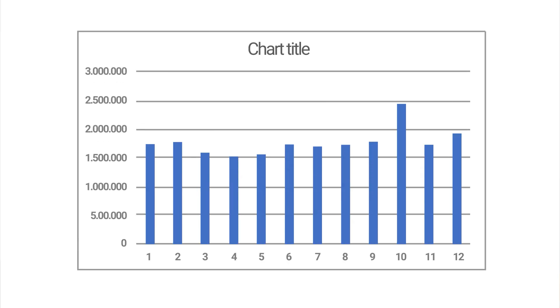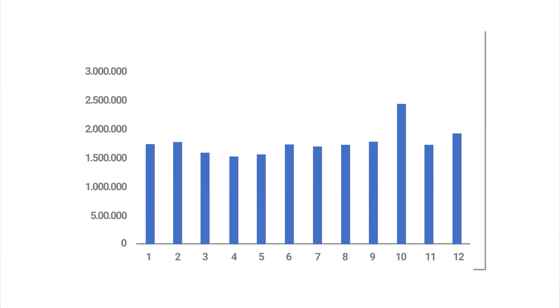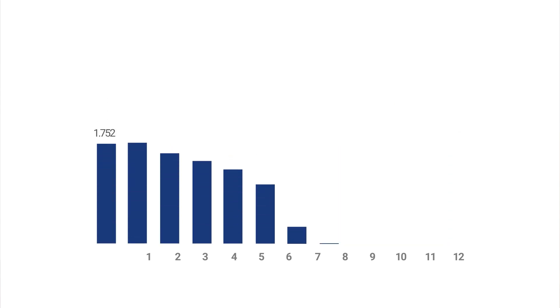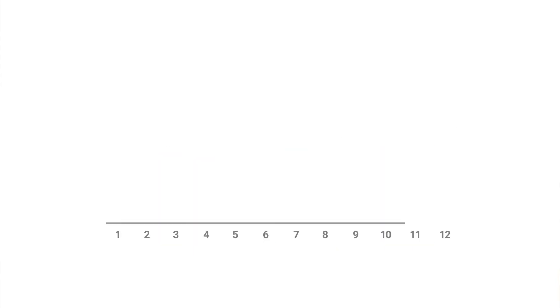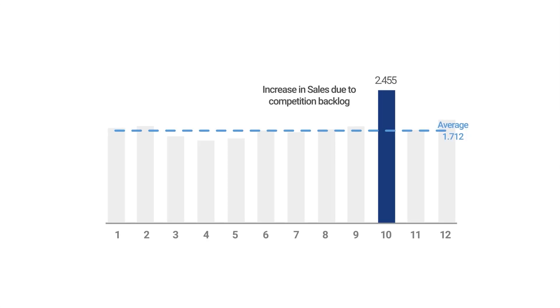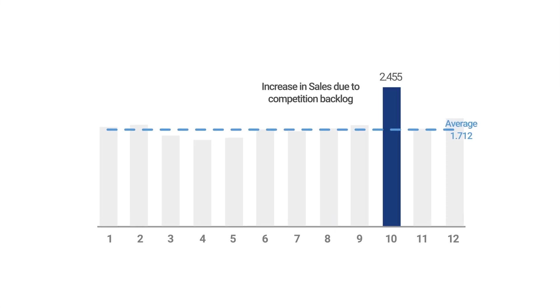Now let's design one. Start by deleting everything Excel gives you by default: the title, the grid lines, the borders, the legends. Then use your company's colors, not random bright ones Excel will give you — keep the design aligned with your brand. Label the axes clearly, or delete them if you label your data directly. Avoid clutter; highlight what matters, mute the rest. And when you have a clear message, add an annotation to make it even clearer.